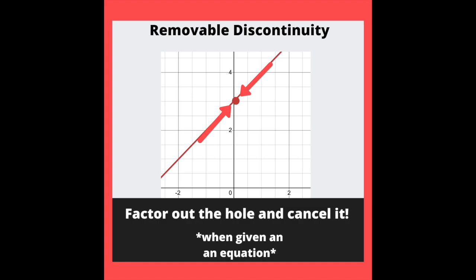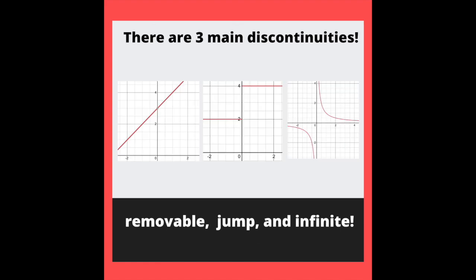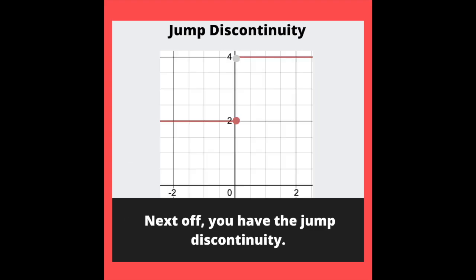Factor out the hole and cancel it. There are three main discontinuities: removable, jump, and infinite. Next, you have the jump discontinuity.